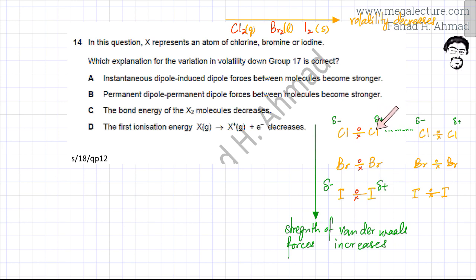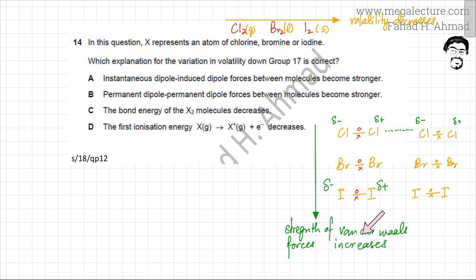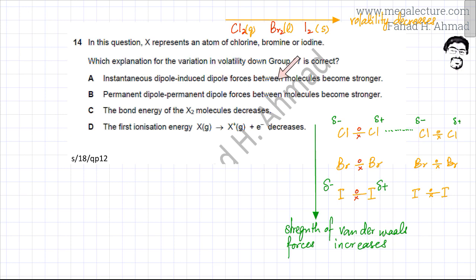In contrast, a chlorine molecule has only 34 electrons total — 17 from each chlorine atom. If 34 electrons get knocked to either side, the temporary dipoles created are much smaller. So the reason van der Waals forces increase down the group is that bigger molecules have more electrons, producing larger temporary dipole–induced dipole interactions. Therefore, the answer is option A: instantaneous dipole–induced dipole forces between molecules become stronger as you move down the group.